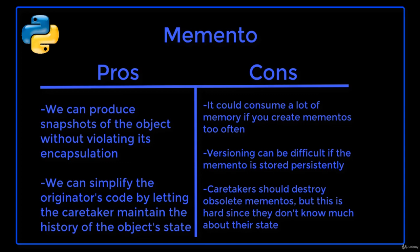The advantages of this pattern are that we can produce snapshots of the objects without violating its encapsulation, and we can simplify the originator's code by letting the caretaker maintain the history of the object's state. The disadvantages are that it could consume a lot of memory if you create mementos too often, versioning can be difficult if the memento is stored persistently, and caretakers should destroy obsolete mementos but cannot perform efficient memory management since they don't know much about their state.